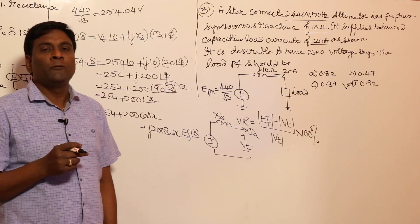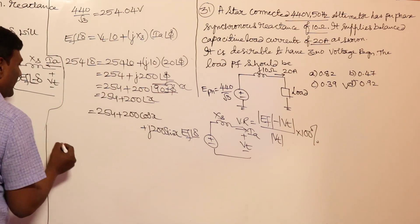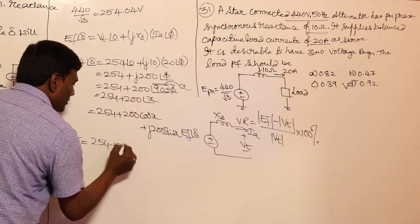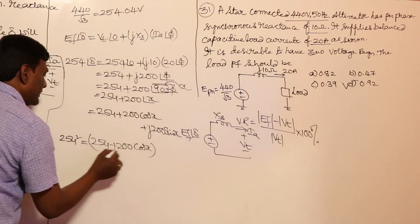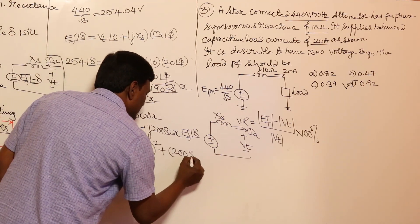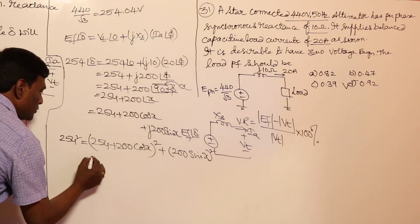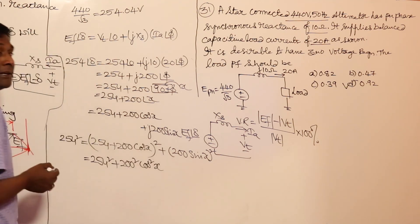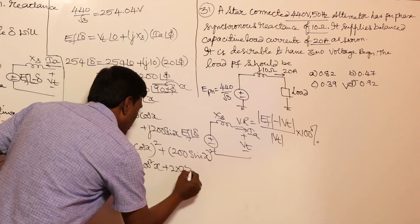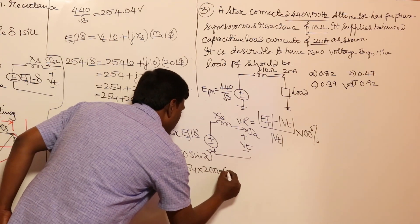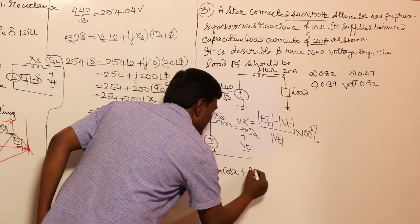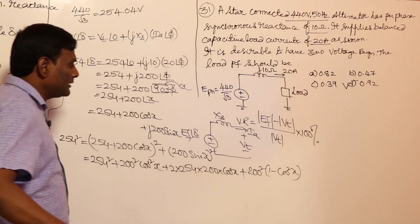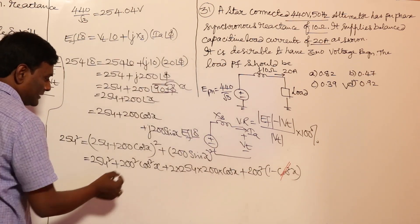Rather than remembering equations, stick to basics. Expanding: 254² = 254² + 200²·cos²x + 2·254·200·cos(x) + 200²·sin²x. The 200²·cos²x and 200²·sin²x combine to 200² (since sin²θ + cos²θ = 1). So 254² = 254² + 200² + 2·254·200·cos(x), which means the 254² terms cancel and 200²·cos²x cancels out.